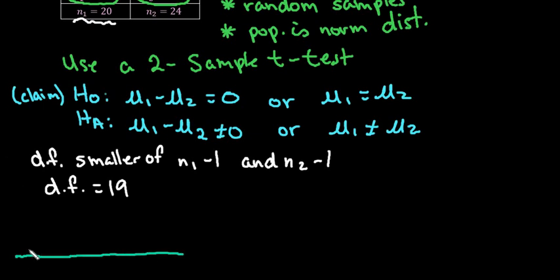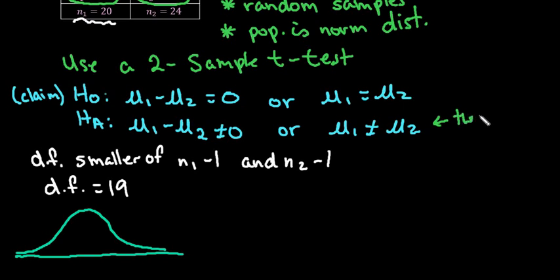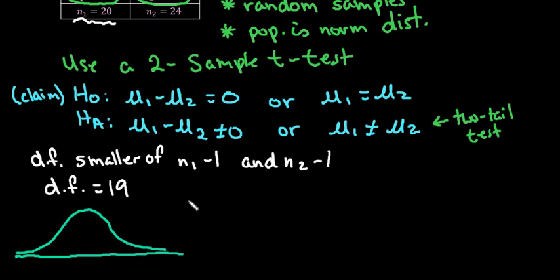So when we draw this out, remember that the tail of the test is always going to be dependent on the alternative hypothesis. This one right here is not equal, so this tells us that we are going to have a two-tail test. When we shade, we will shade the p-values in both tails, because half of the p-value would be on this side and half would be on this side. But I'm not going to shade it until after I run it in the calculator.